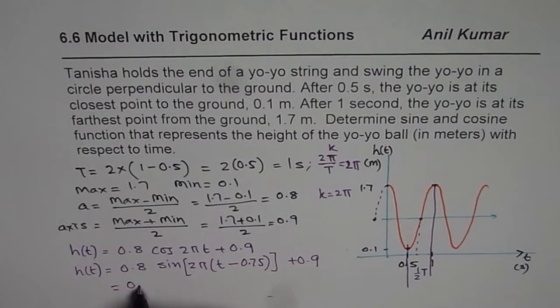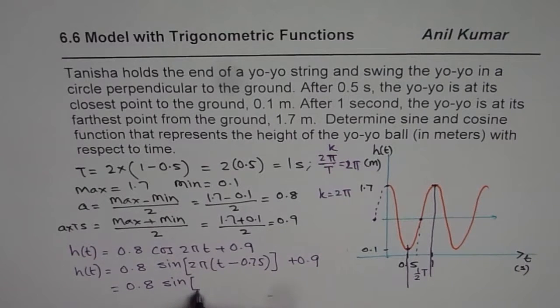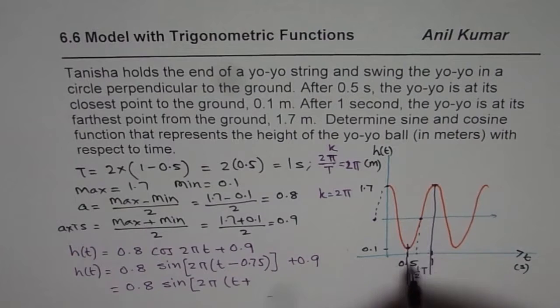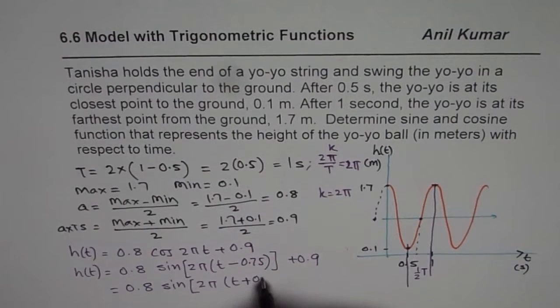I could write this as 0.8 sin 2πt plus quarter of the cycle, which is 0.25.